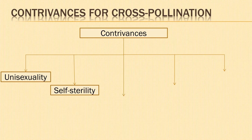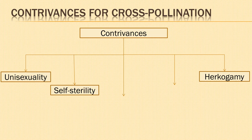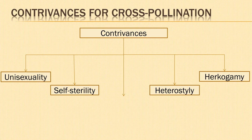Second, self-sterility: in certain flowers, the pollen grains are unable to germinate on their own stigma, e.g. tea flower. To bring about cross-pollination, pollen grains must come from two plants which differ genetically. Third, herkogamy: in some flowers, there are certain structural barriers between the stamens and the pistil of the same flower, e.g. a hood covering the stigma as in pansy, or the lever mechanism as seen in Salvia. Fourth is heterostyly.